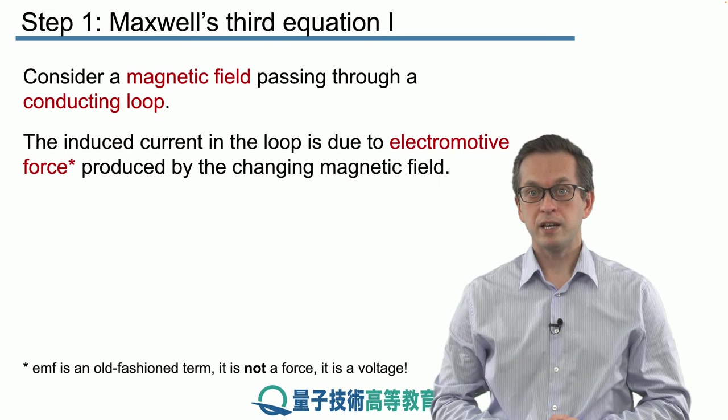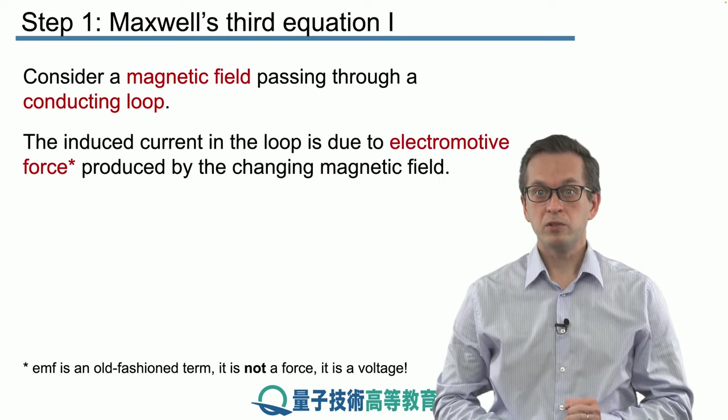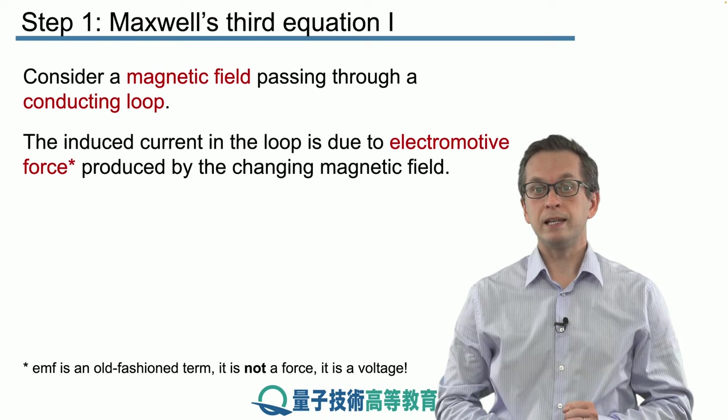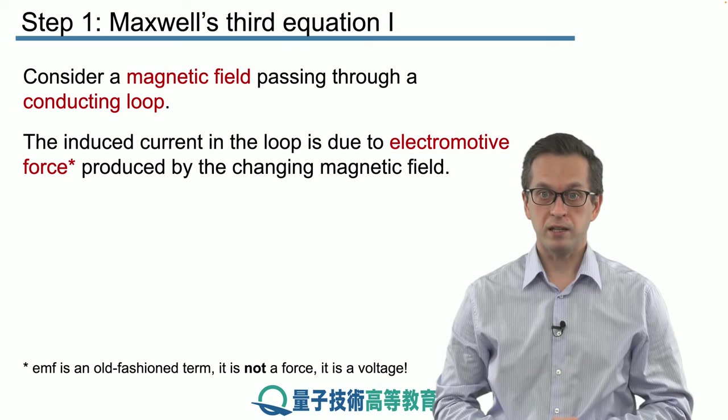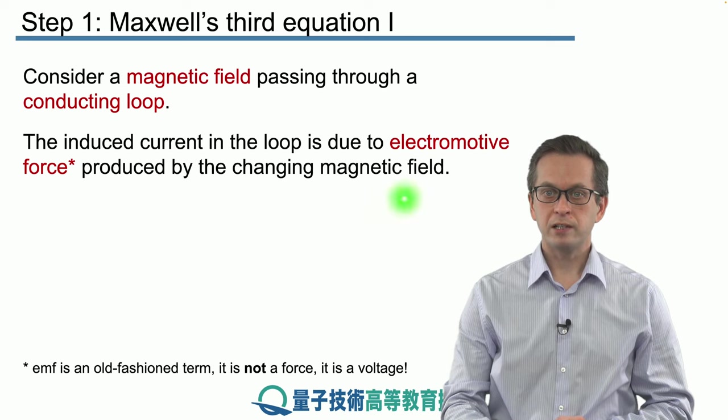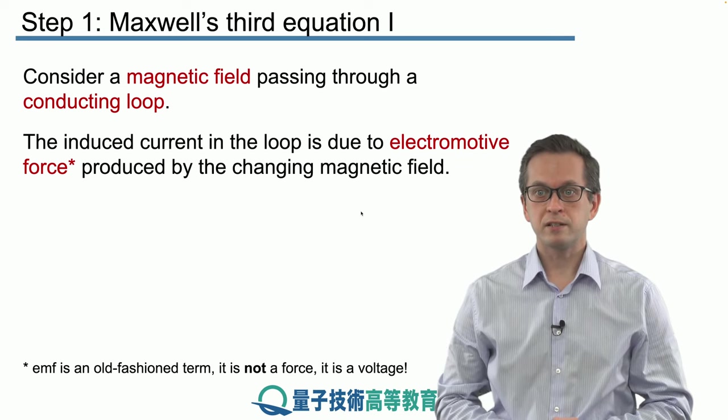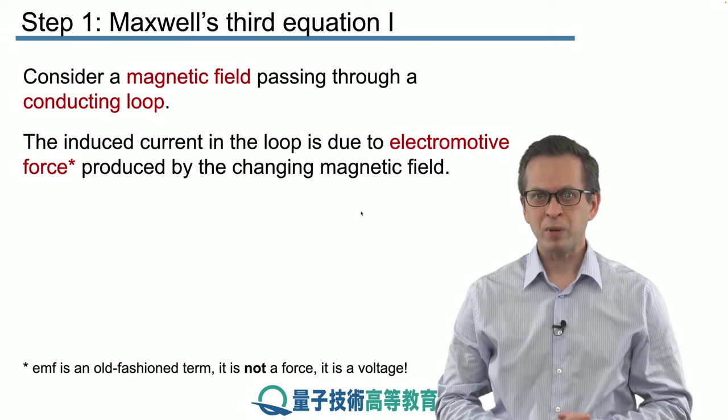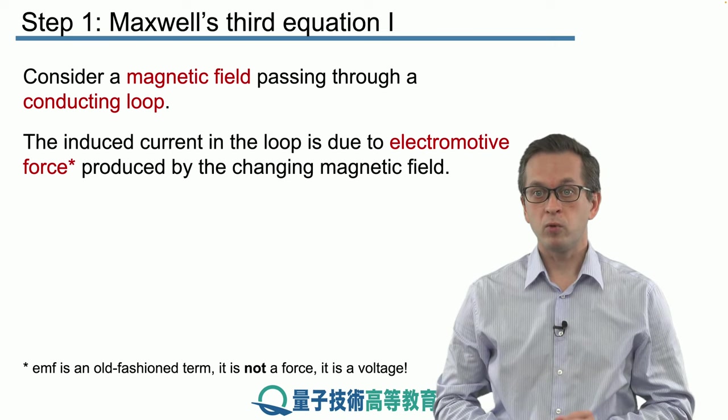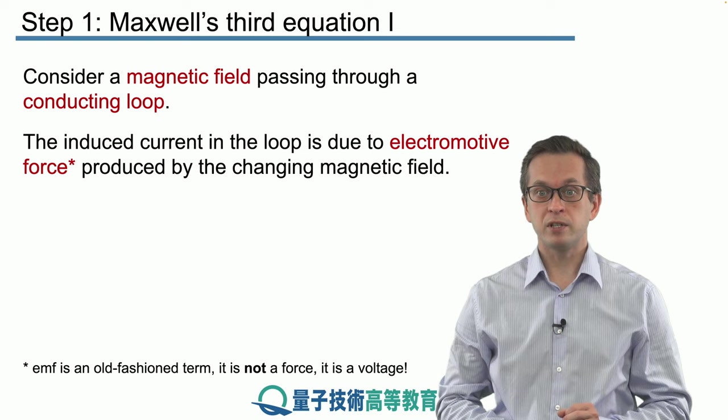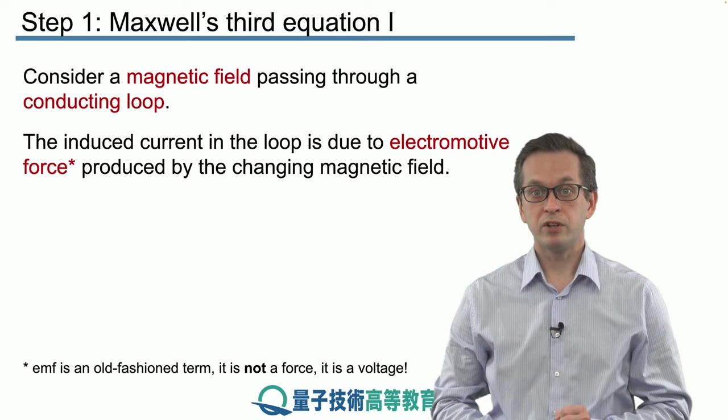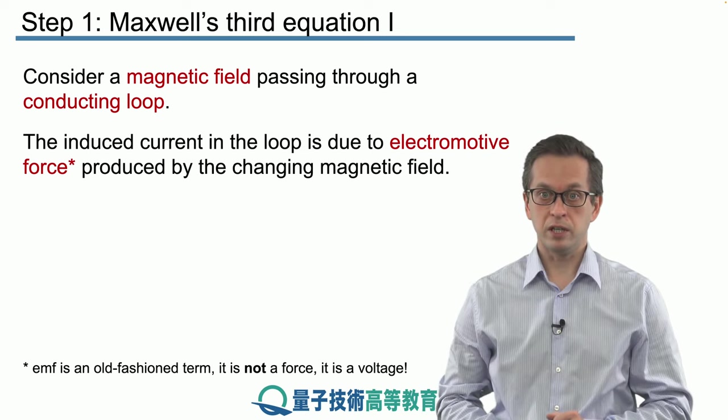So what we can say is the following: the induced current in the loop is due to an electromotive force produced by the changing magnetic field. Now this word electromotive force is rather archaic but still sticking around. But really there is no force. What it means is that the changing magnetic field produces a potential difference or voltage in the loop.